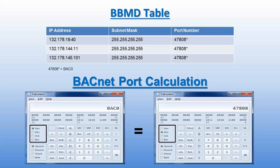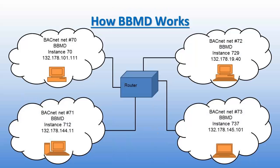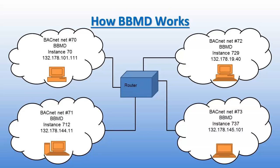That conversion can be done in the Windows Calculator by going to View, then Programmer, which shows the calculator as pictured. This is also an animation diagram showing a BBMD working and passing through a router to other subnets and sending out a message.